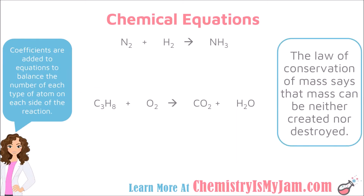The reason we have to balance equations is because the law of conservation of mass states that mass can be neither created nor destroyed. A chemical reaction cannot create or destroy atoms — it simply rearranges them. All atoms present at the beginning of the reaction are present at the end, and we balance the reaction to account for that.